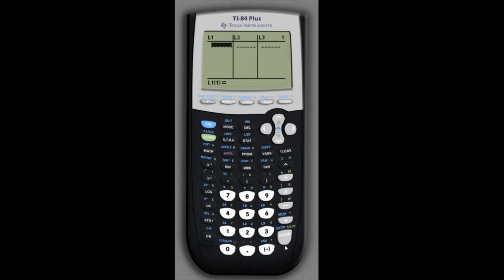In the first column here, L1, the list one, I'm going to enter the year values. So again, starting with 1994, we'll set that as year zero. So we'll type in zero, and then hit enter. The next value is 2 because it's 1996, two years later, then 4, 6, 8, and 10.